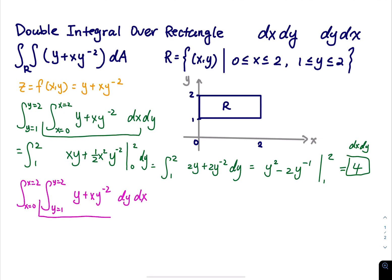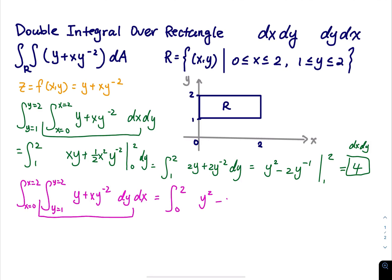So we integrate y plus xy to the negative 2 with respect to y first. The integral of y is one-half y squared, and the integral of xy to the negative 2 is x times y to the negative 1 divided by negative 1, which is negative x times y to the negative 1. We evaluate from y equals 1 to y equals 2.